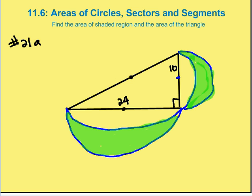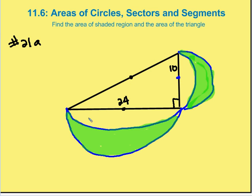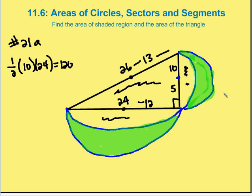Moving on to the next problem — one of my favorites. We're going to find the area of the triangle and also the area of the shaded regions in green. The height is 10 and the base is 24. The area of the triangle is one-half of 10 times 24, which is 120 square units.